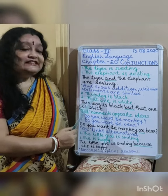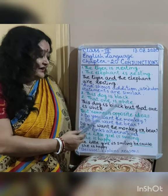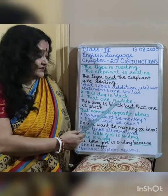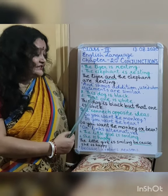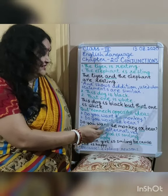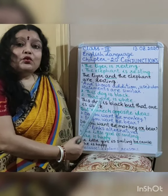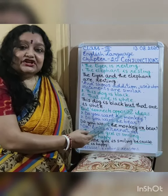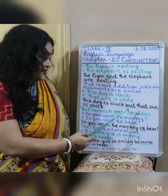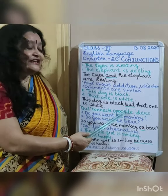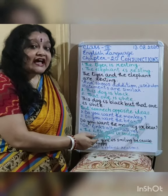Next — this dog is black, that one is white. This dog is black but that one is white. BUT is the conjunction here, which is used to connect opposite ideas.